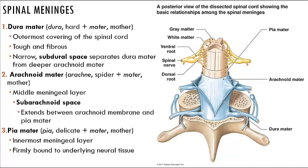A narrow subdural space separates the dura mater from the arachnoid mater. The arachnoid mater is the middle layer and includes simple squamous epithelium. The subarachnoid space extends between the arachnoid mater and the pia mater. The pia mater consists of a meshwork of elastic and collagen fibers strongly bound to the underlying neural tissue. The subarachnoid space contains arachnoid trabeculae — a network of collagen and elastic fibers attaching the two layers — and is filled with cerebrospinal fluid, which acts as a shock absorber and diffusion medium for gases, nutrients, chemical messengers, and waste products.